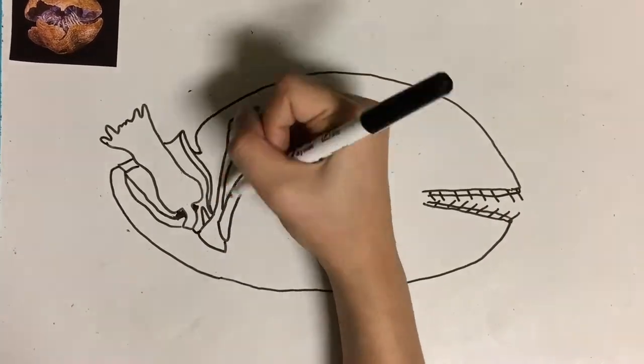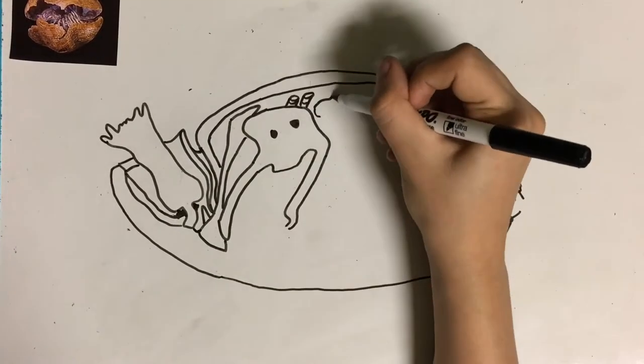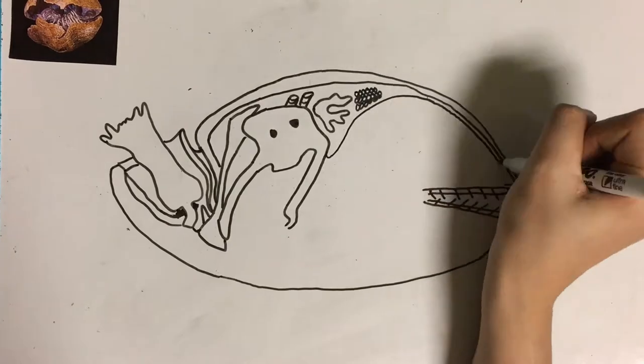Brachiopods feed through a horseshoe or coil-shaped structure of ciliated tentacles called the lophophore. They use this structure to filter feed on planktonic organisms.